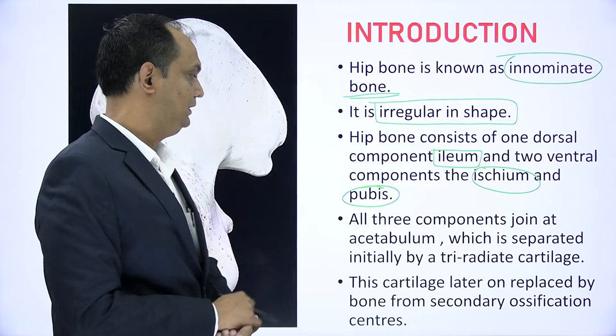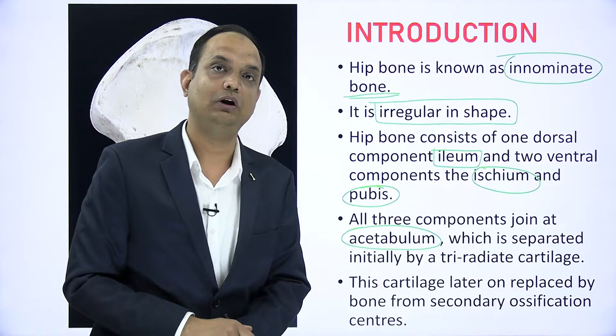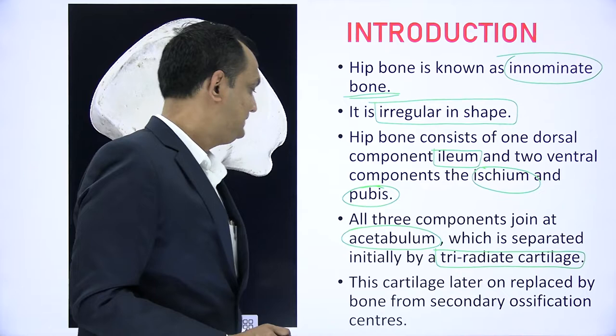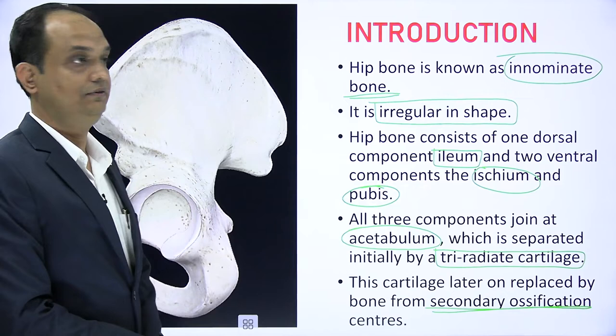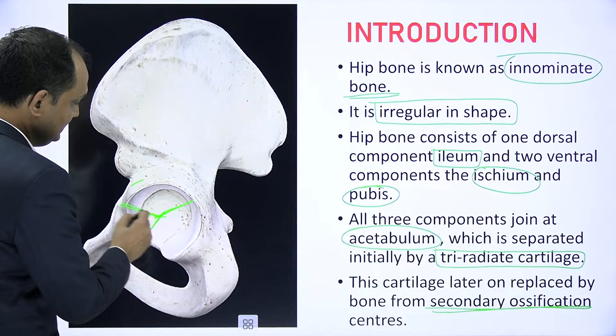All three components join at the acetabulum. The acetabulum is a deep cup-shaped area and it is going to form the ball and socket joint. There is a tri-radiate cartilage present initially and later on, because of ossification, that cartilage disappears and is converted into bone by secondary ossification. In the acetabular area, you will have the tri-radiate cartilage.